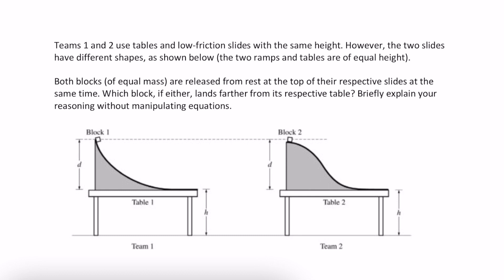Teams one and two use tables and low friction slides with the same height. However, the two slides have different shapes, as shown below. The two ramps and tables are of equal height. Both blocks of equal mass are released from rest at the top of their respective slides at the same time. Which block, if either, lands farther from its respective table? Briefly explain your reasoning without manipulating equations.